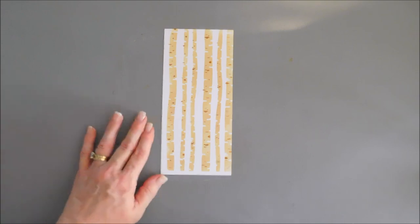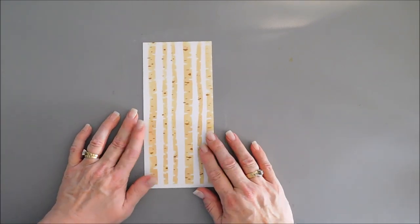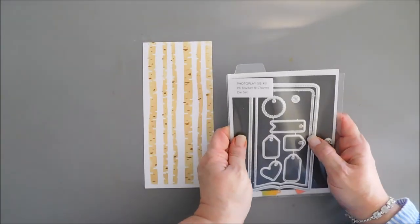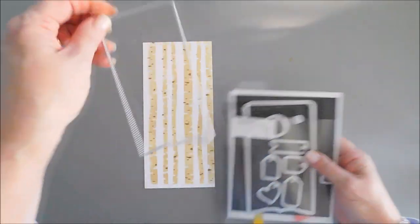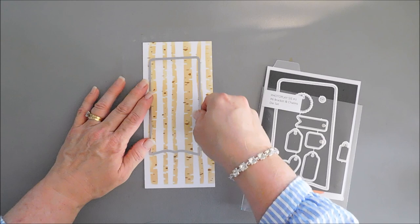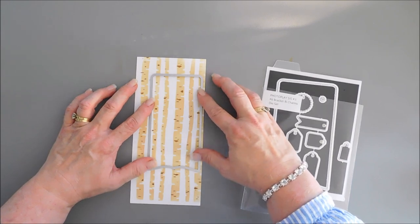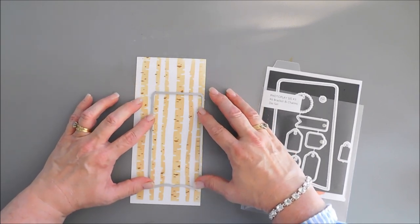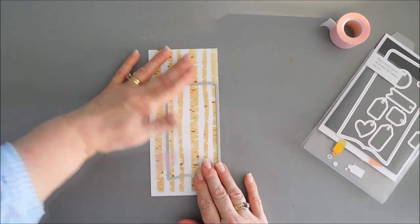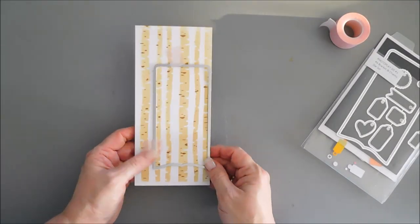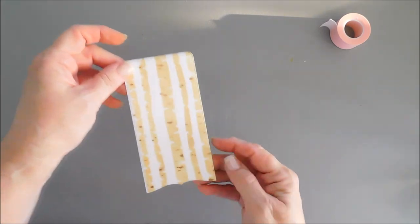Now that we have our birch trees, we're gonna take our Number Six Bracket and Charms die set. We're gonna take the smallest background and die cut out our birch trees. We're gonna find a pretty spot here. I think that's a great spot. Let's take this down. I'm gonna run this through my die cut machine, and then we're gonna have a pretty neat background for our card. Our birch tree background is all done.